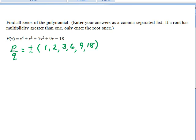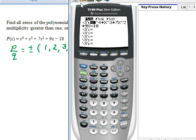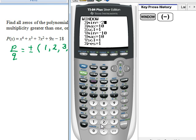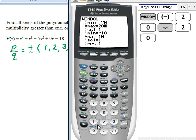Let's look at the graph. I've already entered it in the y equals screen. Let's go to the window and enter negative 20 and 20 for x min and x max because our largest and smallest possible rational zeros were plus and minus 18.